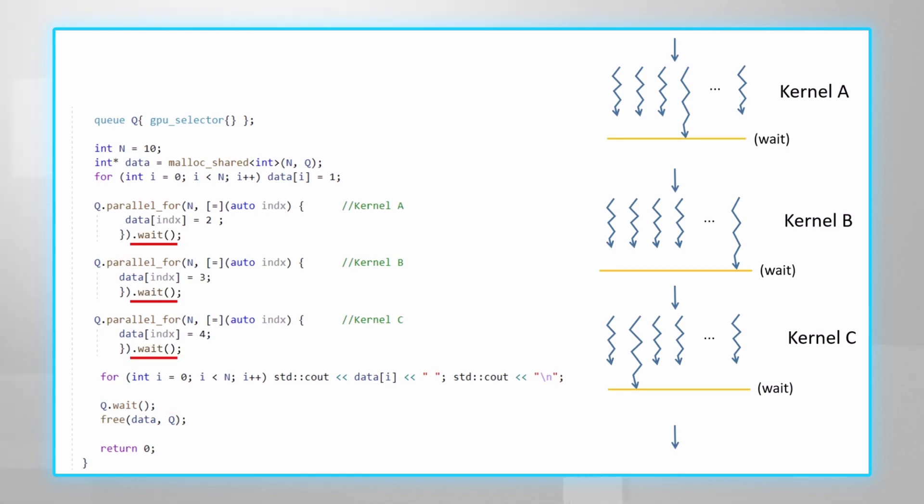One way is to add a barrier to each of the kernels. So we can add wait commands to each of the kernels, and now we can make sure that a kernel will be launched only after the previous one has finished all of its work items. This will block or synchronize the execution on the host.